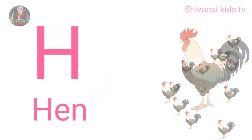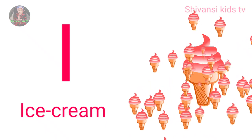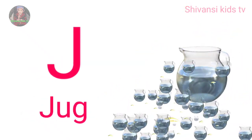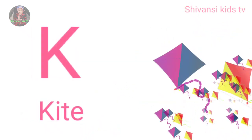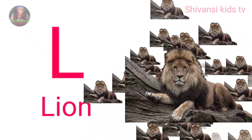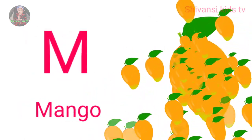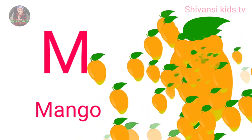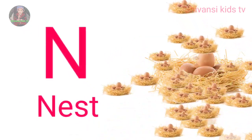H for hand, I for ice cream, J for jug, K for kite, L for lion, M for mango, N for nest.